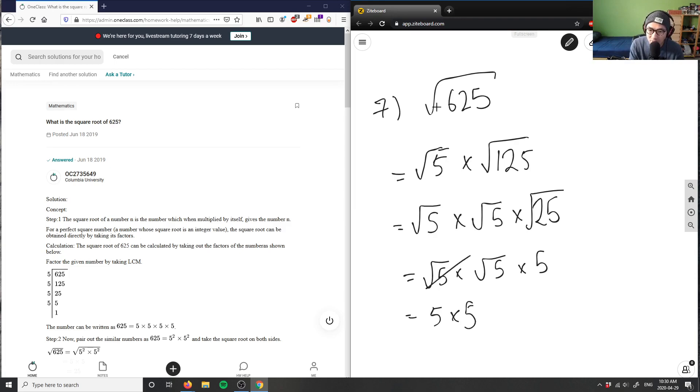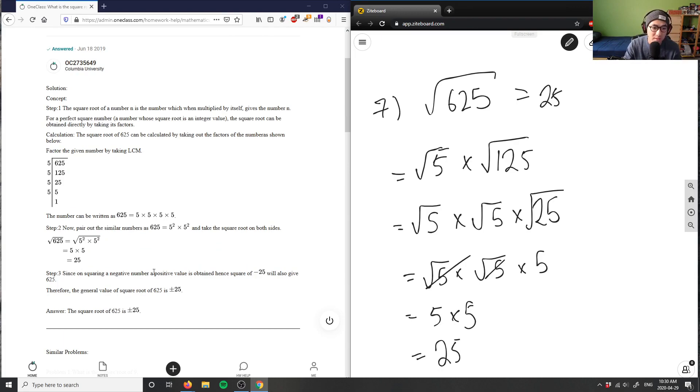I have 5 times 5, so these cancel out and this equals 25. So square root of 625 is equal to 25. This is my answer for this problem, and this solution is correct.